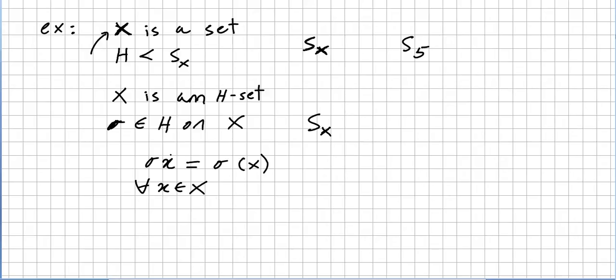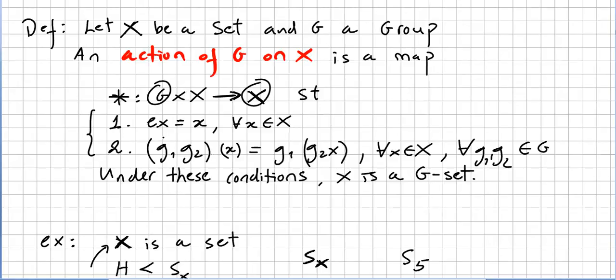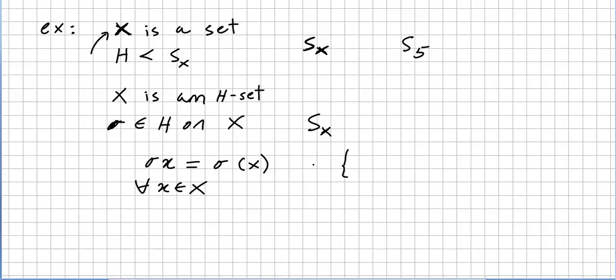So this is very easy to check that those two conditions are satisfied. That the identity times an element in the set equals the element and this second condition. Just use the permutation compositions. Very easy to check that. So in order to check just try with any set with n elements and check that with a symmetric group of n.